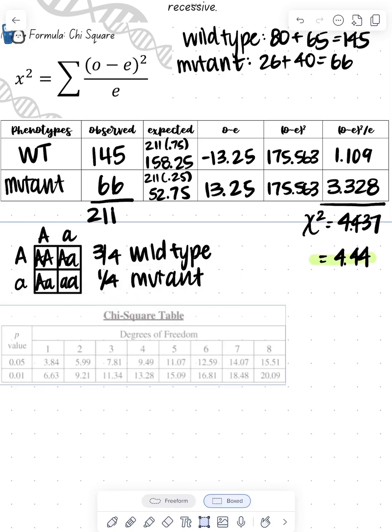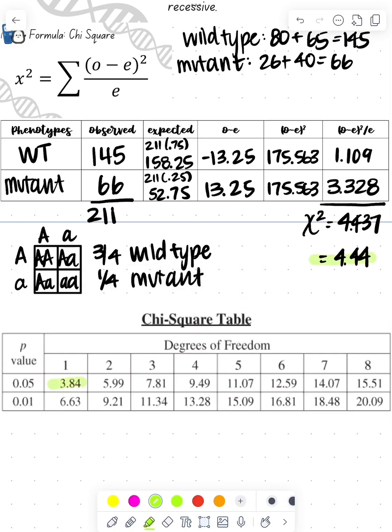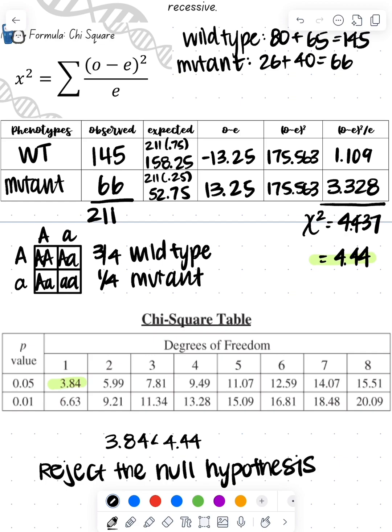And then, of course, I'm going to round it to the 100th place. So that's 4.44. Then we're going to compare that value to our critical value that's in our table. So 3.84 is less than our calculated 4.44, which tells us that we're going to reject the null hypothesis, which means that it is not autosomal recessive.